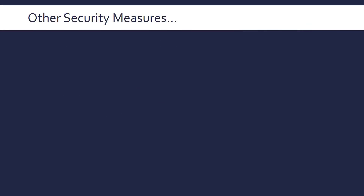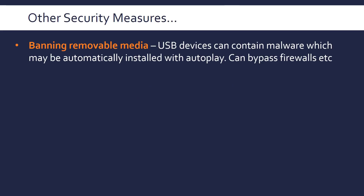Let's end on a similar theme. These are further security measures to know about. First, you could ban removable media — which usually means USB devices — as these can contain malware. Especially with an auto-play feature, plugging in a USB device might automatically install malware. You could hide a chip in a keyboard or manipulate any USB device to install malware, which can bypass firewalls and is easy to hide. Anti-malware software can scan USB ports specifically, but banning them outright is often better.